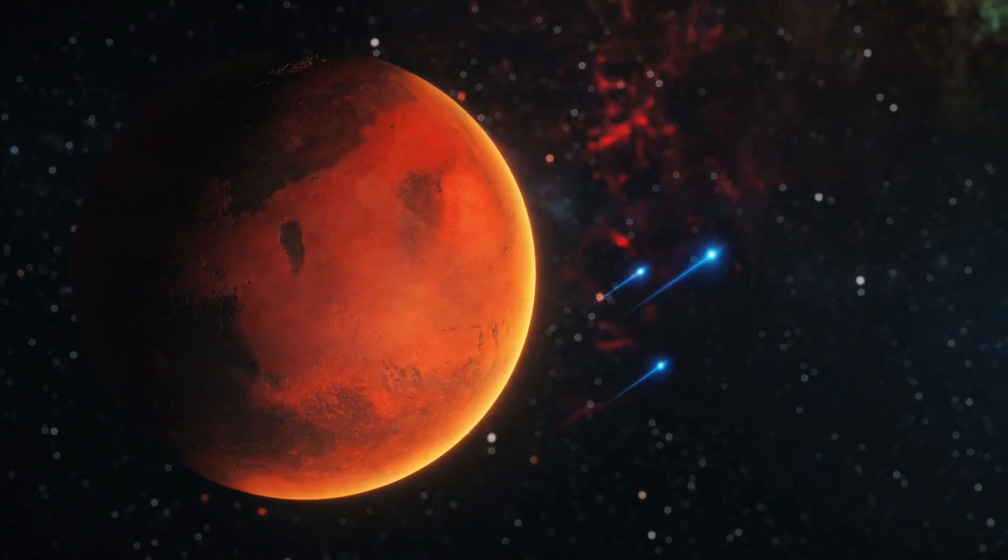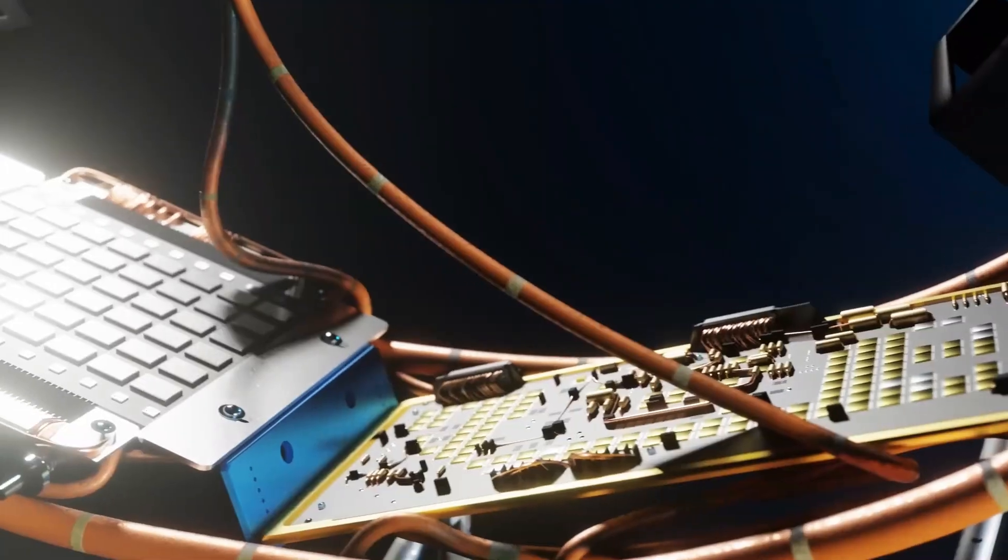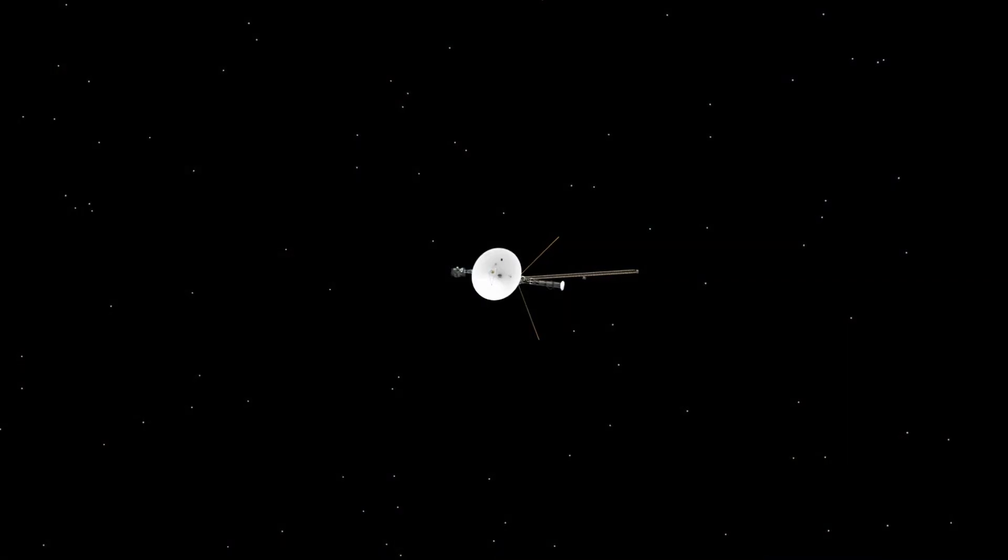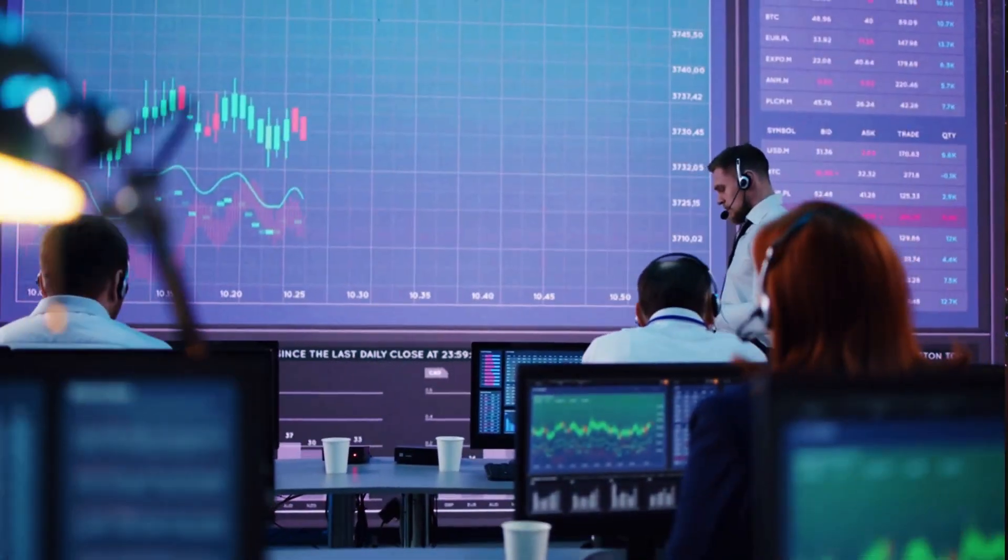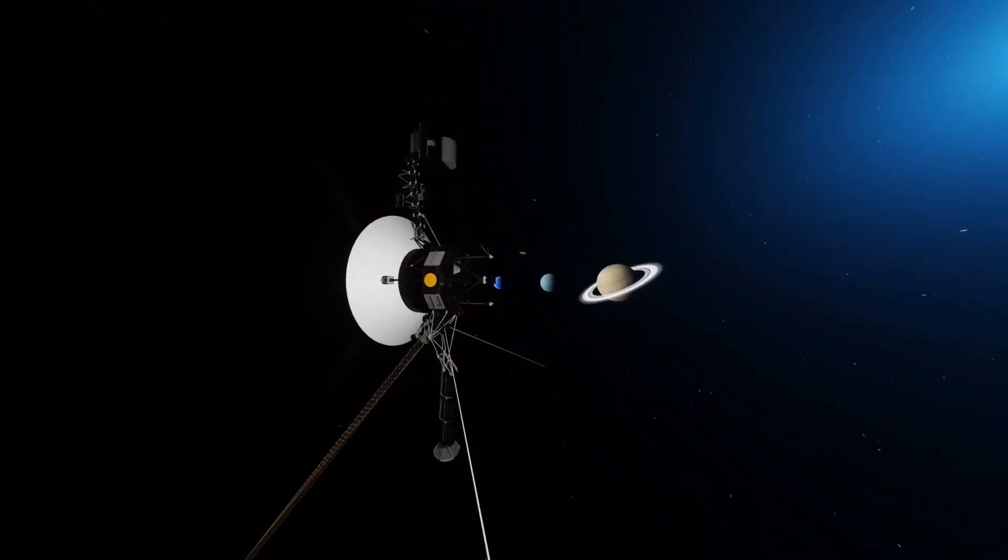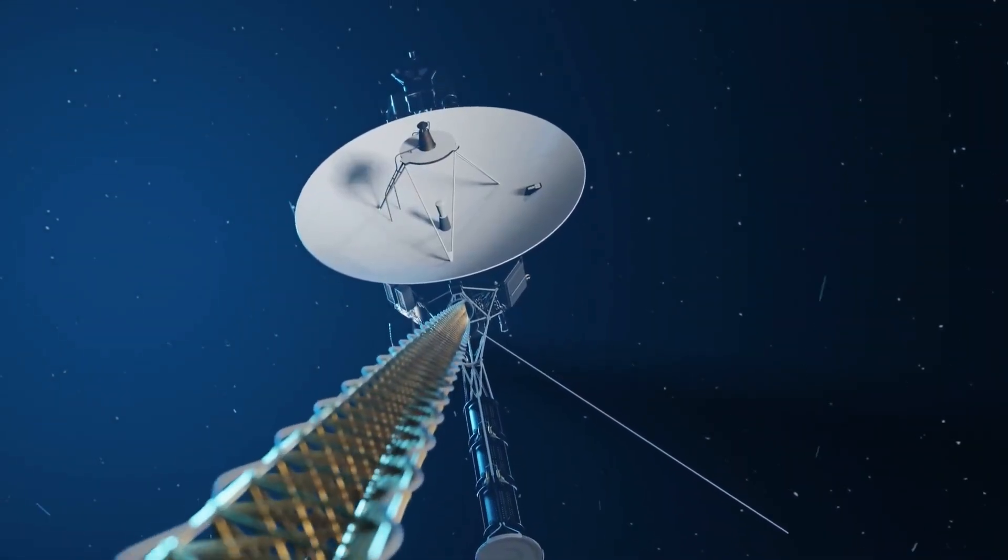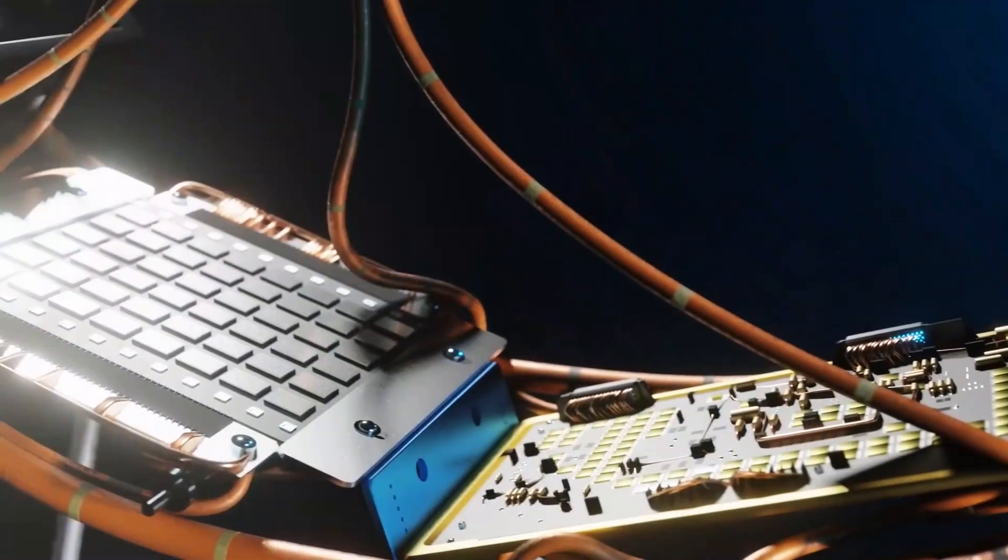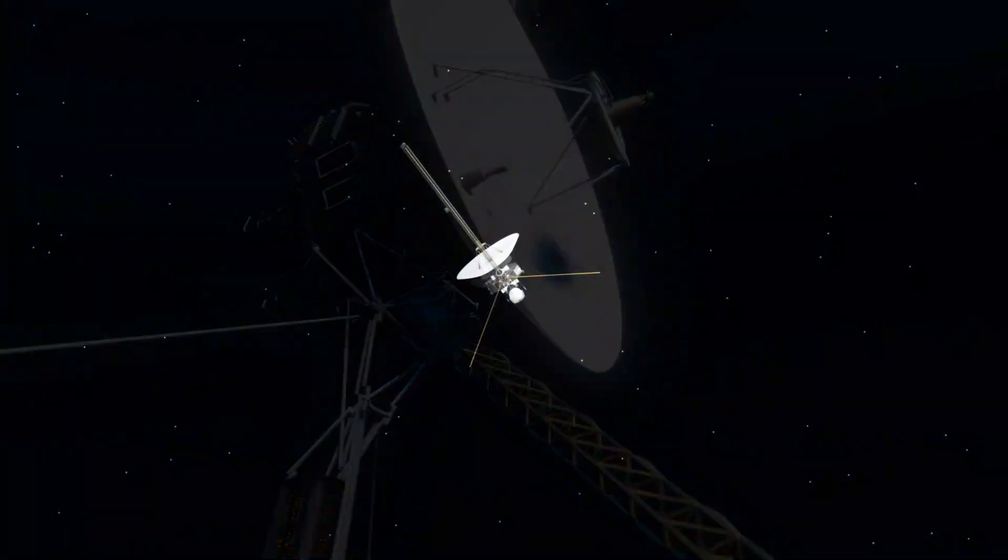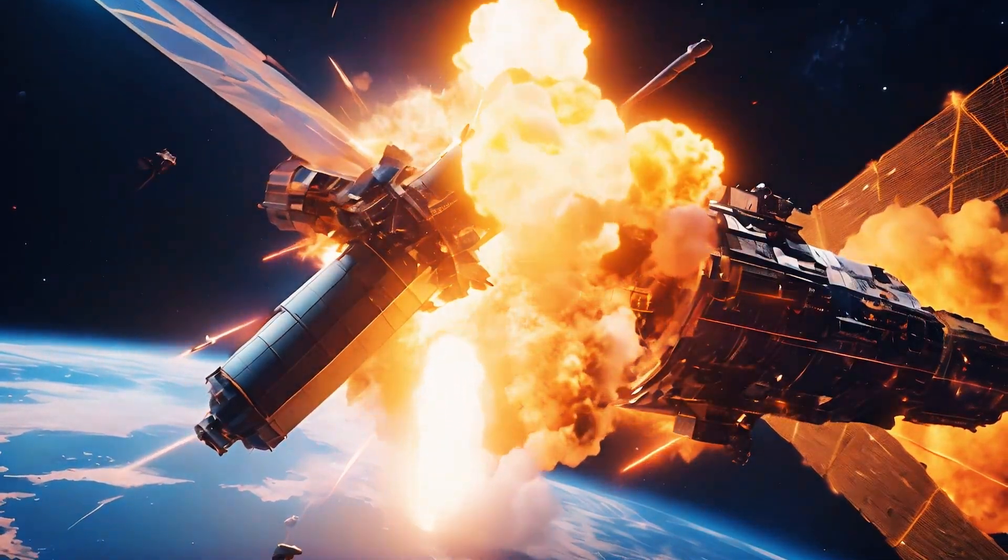Originally designed for a five-year mission, Voyager 2 has far outlived expectations, sending valuable data back for over four decades. Its longevity is a tribute to the innovation and skill of the engineers who created it. Despite its age, the Voyager 2 team has skillfully managed its power, shutting down non-essential systems to keep its instruments operational. Operating with less power than a typical light bulb, it still makes monumental contributions to science. However, as its power wanes, the team faces difficult choices about which instruments to keep running, knowing that each year brings the spacecraft closer to a silent end.